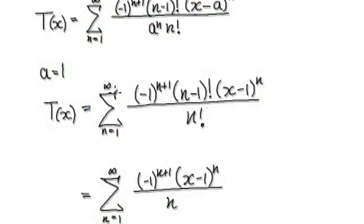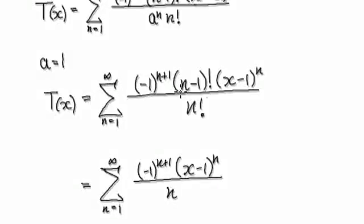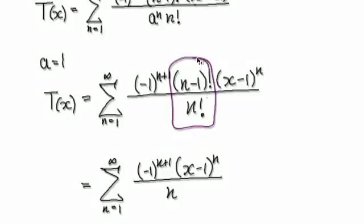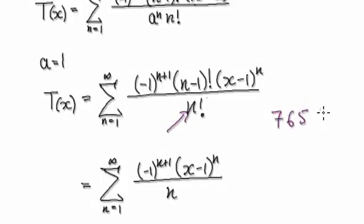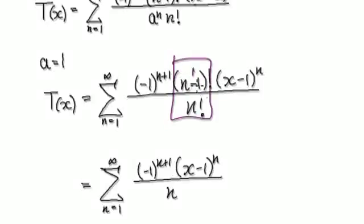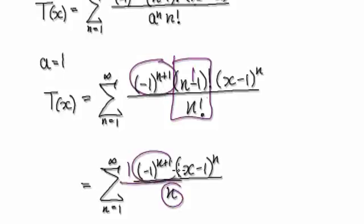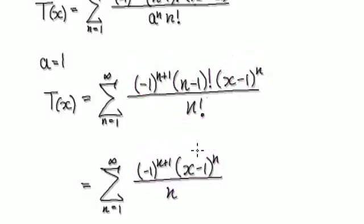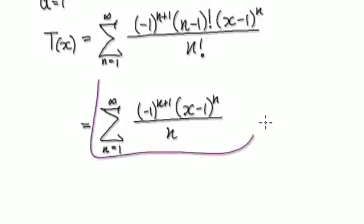Now tidy this up. Looking at this, you can simplify this part here. If you put, say, 7 into n factorial — that's 7 times 6 times 5 times 4 times 3 times 2 times 1 — and n minus 1 factorial is 6 times 5 times 4 times 3 times 2 times 1, everything cancels out leaving you with 1 over n. So this simplifies to 1 over n, and everything simplifies to this final form.